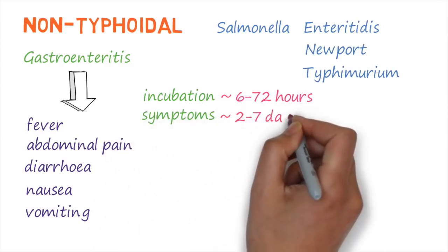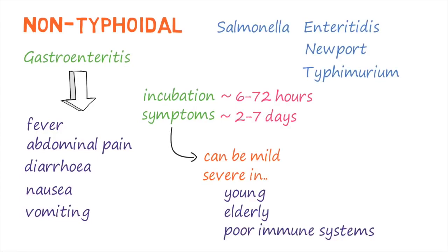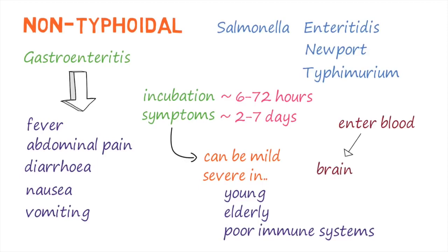Although the disease can be relatively mild in most people, it can be quite severe in the young and elderly and those with poor immune systems. Sometimes the bacteria that cause non-typhoidal salmonella can enter the blood and infect other organs like the brain or the urinary tract and cause local complications.